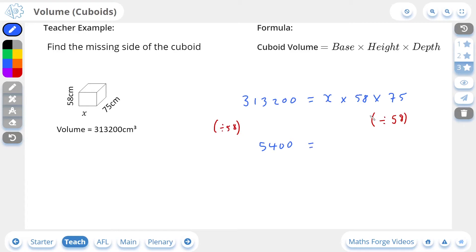And this now leaves us with 5,400 on the left-hand side. And on the right-hand side, since we've divided through by 58, this 58 here gets cancelled, leaving us just with x times 75. And of course, we haven't actually cancelled out the 75 yet, but that's what we're going to do next.